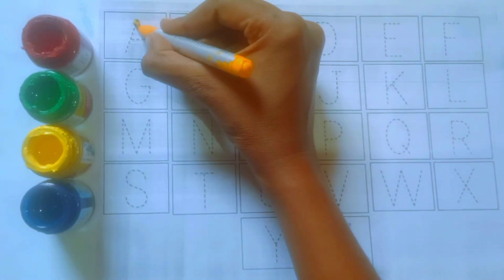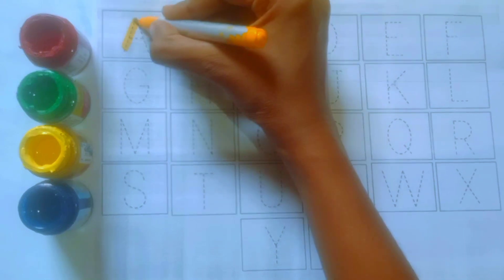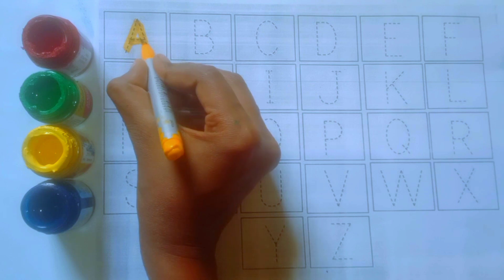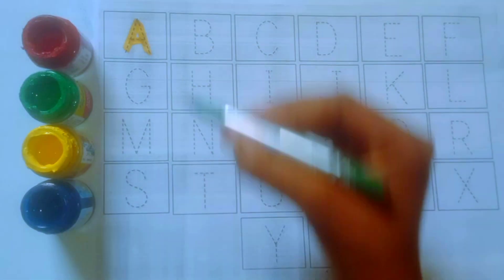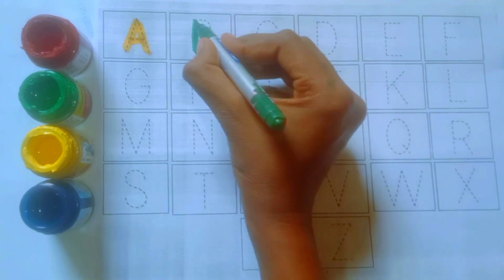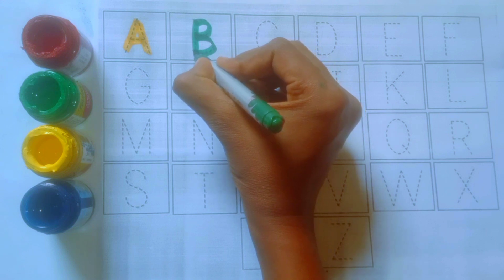Yellow colors, A. A for apple. Green color, B. B for ball.